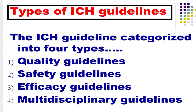Next are the types of ICH guidelines. The ICH guidelines are categorized into four types: number one, quality guidelines; number two, safety guidelines; number three, efficacy guidelines; and number four, multidisciplinary guidelines.